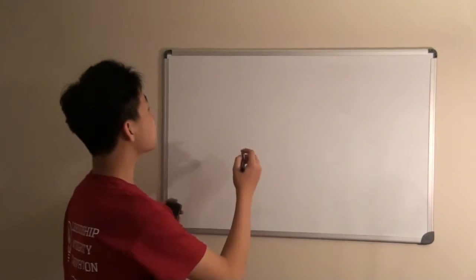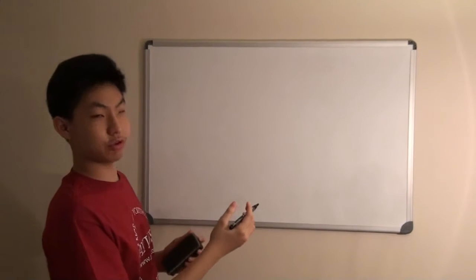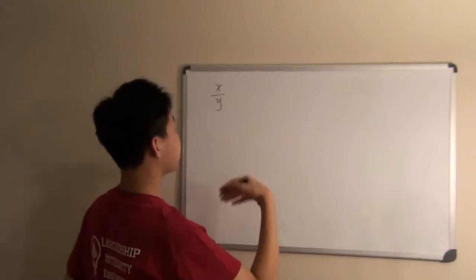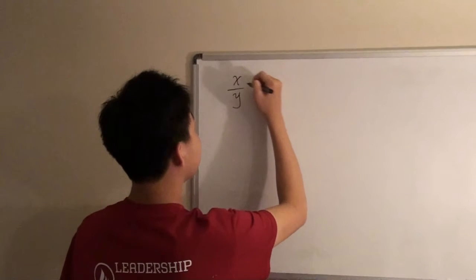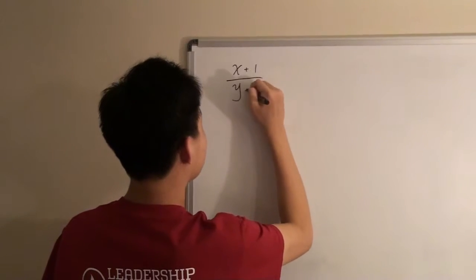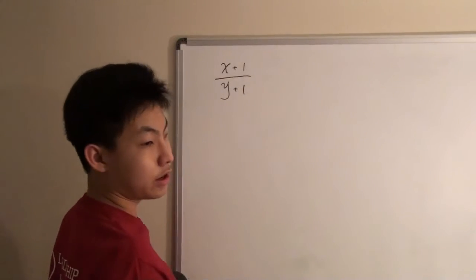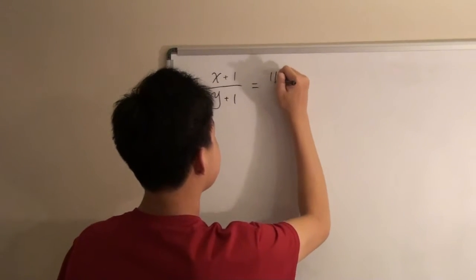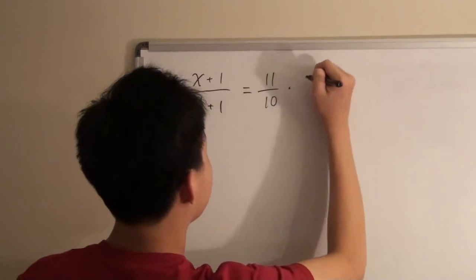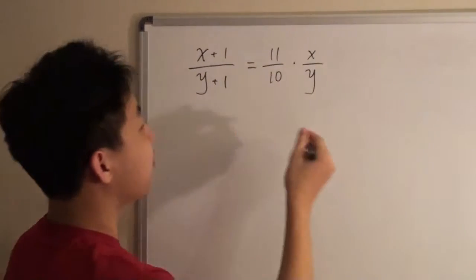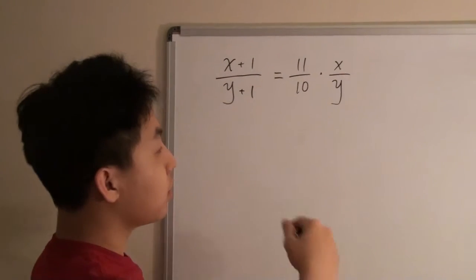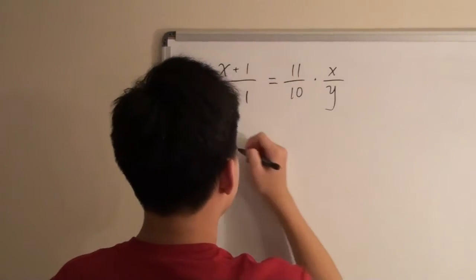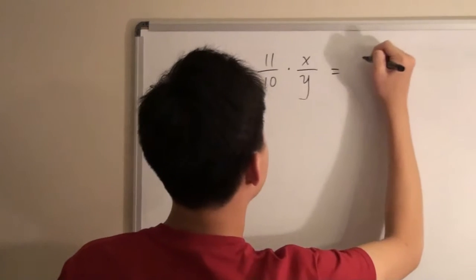Okay, so we can start off by creating an equation with the information that we are given. So the fraction x over y is relatively prime to each other, and when the values are added with 1, it creates a fraction that is 10% greater than what it was. So this can be translated into 11 over 10 times x over y, since 11 over 10 is equal to 1.1, which would be the fraction times 10% more of itself. And this would be equal to...